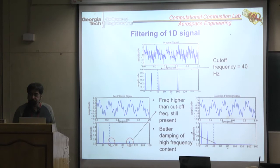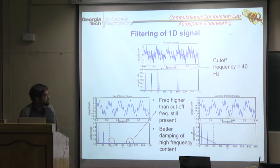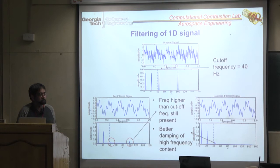Both filtering approaches are valid. In finite volume or finite difference schemes, box filters are used—actually not even explicitly done, just implicitly assumed. Spectral cutoffs are done in spectral schemes. Gaussian filters are not used that much.